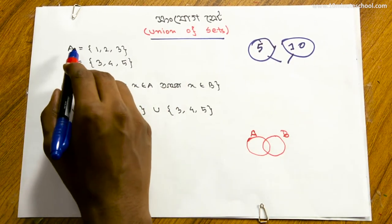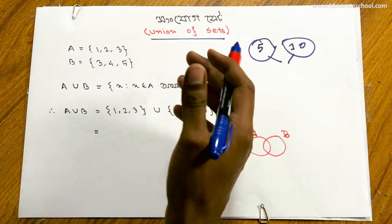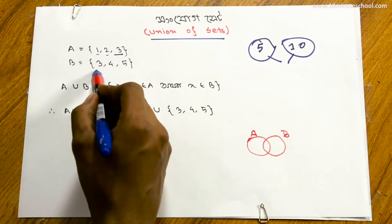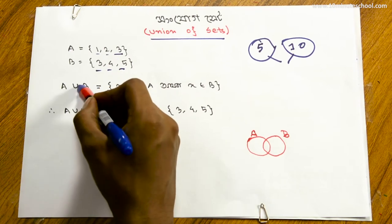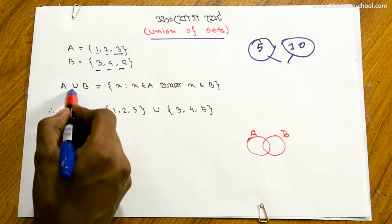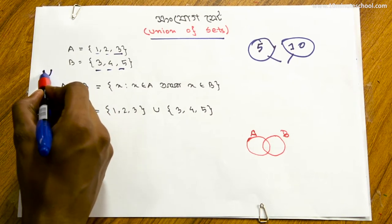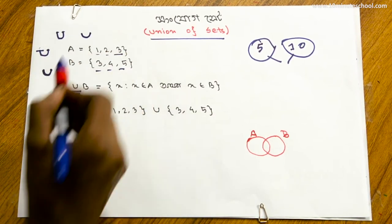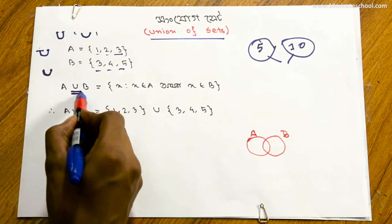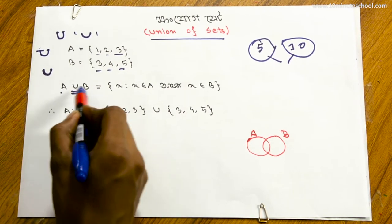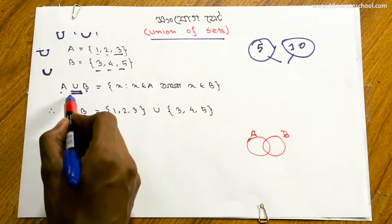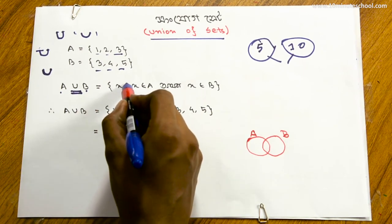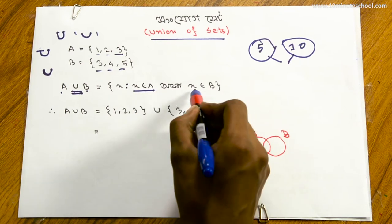યુનિયનનો અર્થ છે — આ બે સેટ, એ.કે. 'A union B', આ જ્ઞ છે. 'A union B' ની એ કન્ડિશન ડિફાઈન થઈ: x element of A union B, જ્યારે x element of A હોય અથવા x element of B.